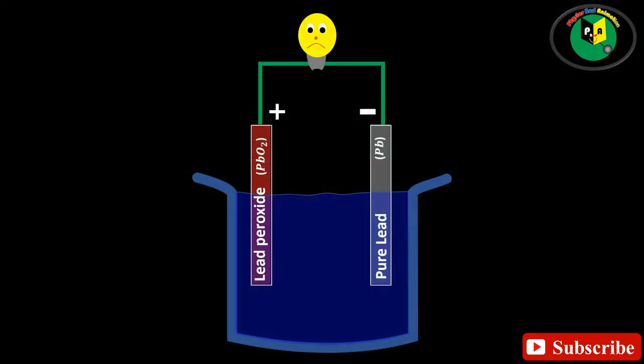A load is connected externally between these plates. In diluted sulfuric acid, the molecules of acid splits into positive hydrogen ions and negative sulfate ions.